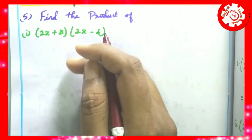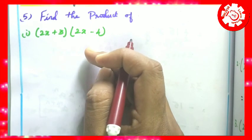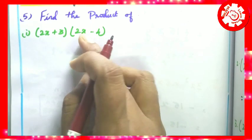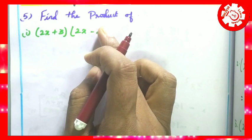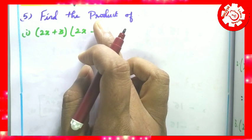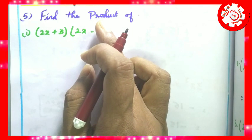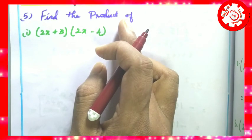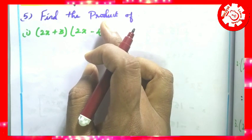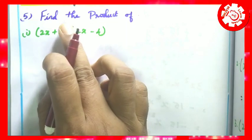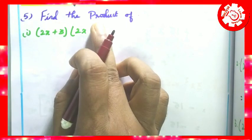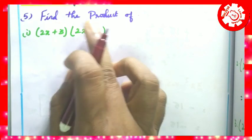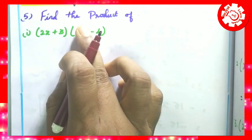We continue the syllabus now. We are on Exercise 3.1 of continuity, 8th standard syllabus, 5th Roman. That is, 3.1 of the 5th Roman section.